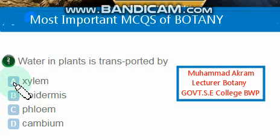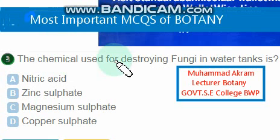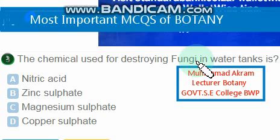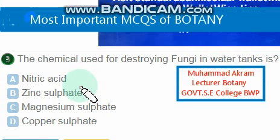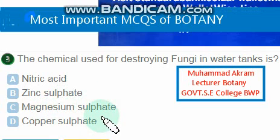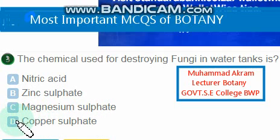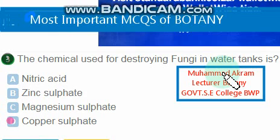Water in plants is transported by xylem — option A is the right option. Xylem transports water in plants. The chemical used for destroying fungi in water tanks: nitric acid — no; zinc sulfate — no; magnesium sulfate — no; copper sulfate — yes.